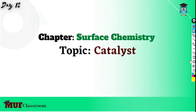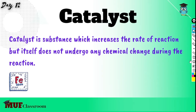Today we are going to discuss about Catalyst from Surface Chemistry. A catalyst is nothing but a substance which increases the rate of reaction but itself does not undergo any chemical change during the reaction. Consider an example such as Iron in Haber's process, where Iron is used as a catalyst to increase the rate of reaction to form Ammonia, but Iron doesn't undergo any change during that reaction.